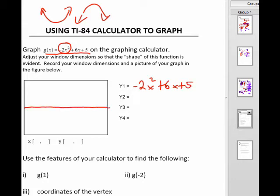I'm just sketching in my x and y axes. And my graph looks something like that. Now these sections down below here are just asking you to record what your window dimensions were. And mine were negative 10 to 10 and negative 10 to 10.